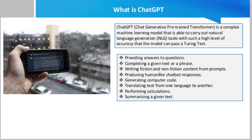ChatGPT is built on a large language model (LLM) called GPT-3, Generative Pre-Trained Transformer 3. A large language model is a type of deep neural network that uses billions of parameters and is trained with petabytes of data. The model was developed by OpenAI, a research firm founded by Elon Musk.